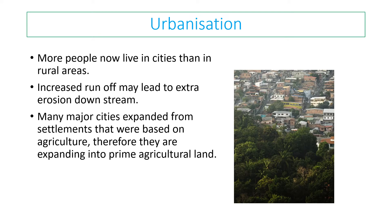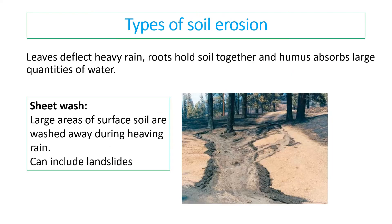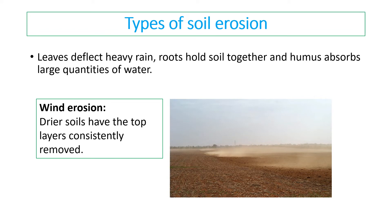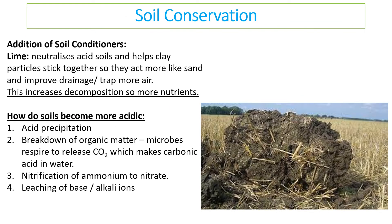Urbanization is also a problem - more people living in cities means increased runoff may happen downstream because water is no longer able to soak into what was originally farmland and forest land, causing more erosion. In terms of types of soil erosion, there is sheet wash, when large areas of soil are washed away during heavy rain, which can include landslides. Gullying is when channels on hillsides follow the rainfall and over time get deeper and deeper. Wind erosion occurs when drier soils are removed by the wind, taking minerals with them.